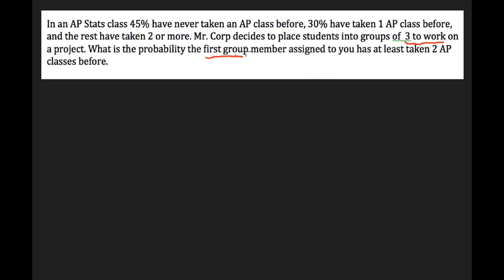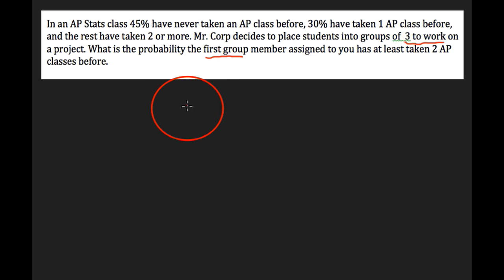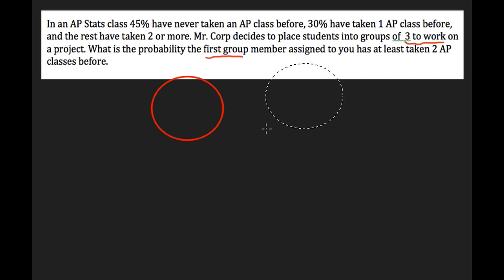You see these percentages too, and you might be thinking it's a Venn diagram type of thing. But notice a person could have taken zero AP classes as well as one AP class — so whatever those percentages are, they're going to be different-sized circles. They're disjoint.